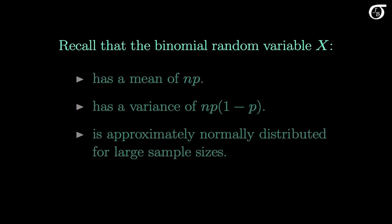Recall that a binomial random variable x has a mean of n times p, a variance of n times p times 1 minus p, and, due to the central limit theorem, is approximately normally distributed for large sample sizes. We are going to use these characteristics to derive the characteristics of the sampling distribution of P-hat.